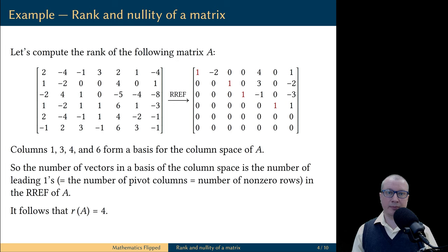In other words, we just proved that the dimension of the column space is equal to the number of the pivot columns in the reduced row echelon form.